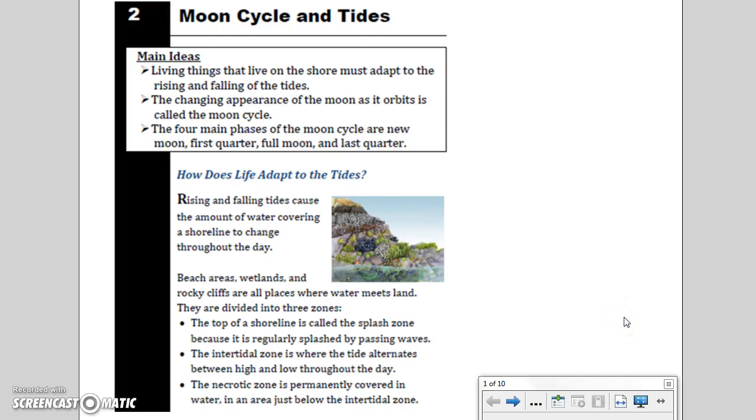Moon Cycle and Tides. Main Ideas: Living things that live on the shore must adapt to the rising and falling of the tides. The changing appearance of the moon as it orbits is called the moon cycle. The four main phases of the moon cycle are new moon, first quarter, full moon, and last quarter.